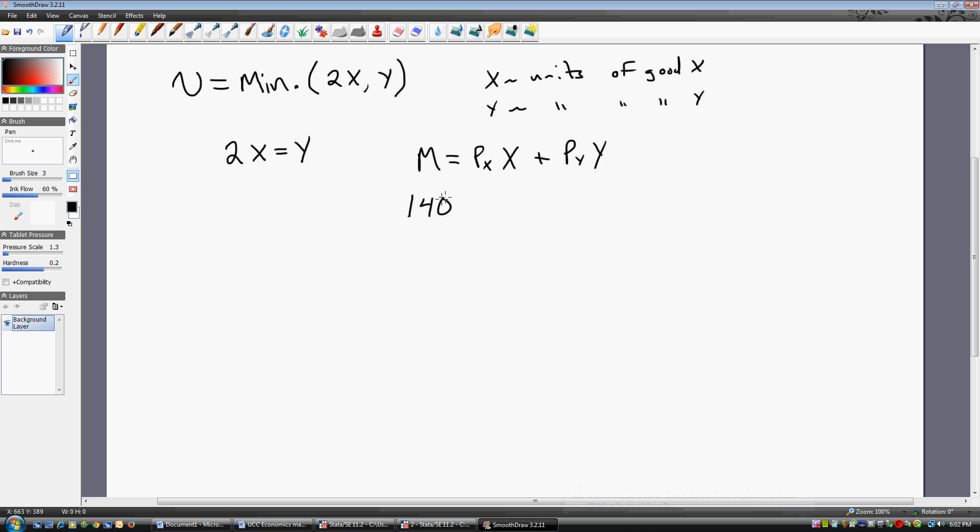Let's assume that the consumer has $140 of income. The price of good X is $10. So P subscript X is $10. The price of good Y is $2. So now we have the consumer's budget constraint.